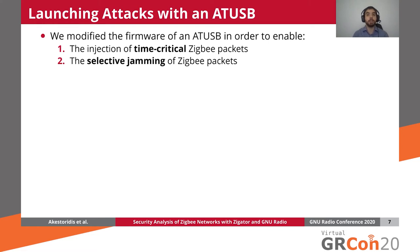Bastian Bloessl wrote a blog post last year where he described how he was able to implement a reactive jammer and a selective jammer by modifying the firmware of an ATUSB. However, his implementation of a selective jammer was only able to interfere with packets that were destined for a specific node, while for our experiments, we wanted to have the ability to define arbitrary jamming conditions for the attacks that we developed.